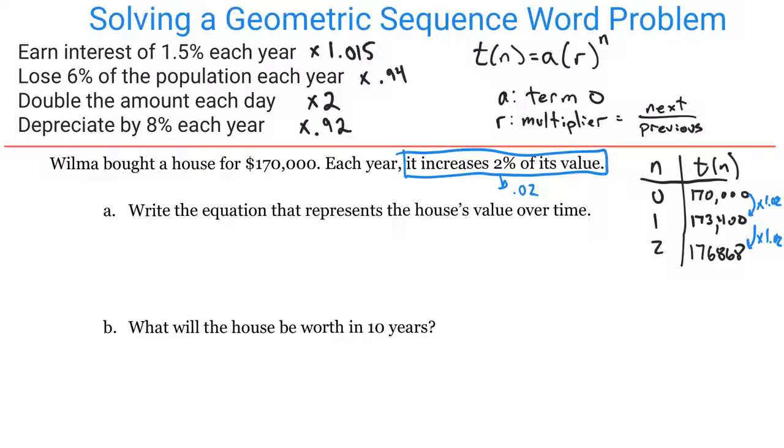As we write our equation, T(n) equals our initial value, which is $170,000. That's how much she bought it for. The multiplier is 1.02, and this would be to the nth power. So that's your formula. Turning this percent into that multiplier is important.